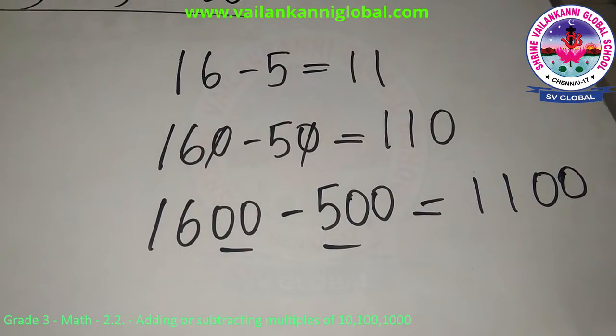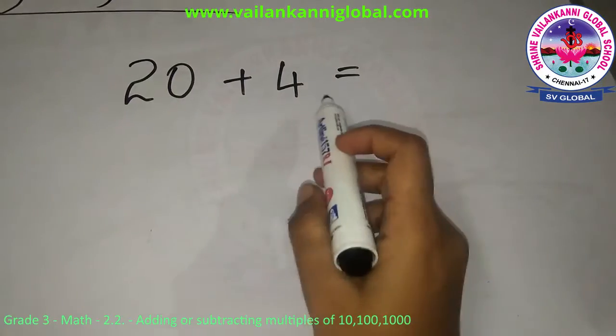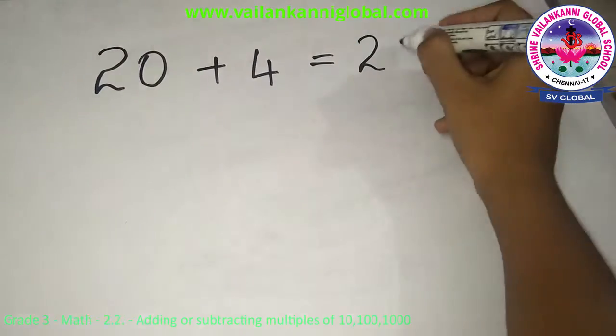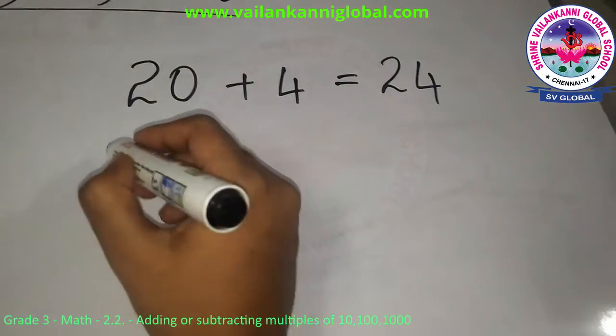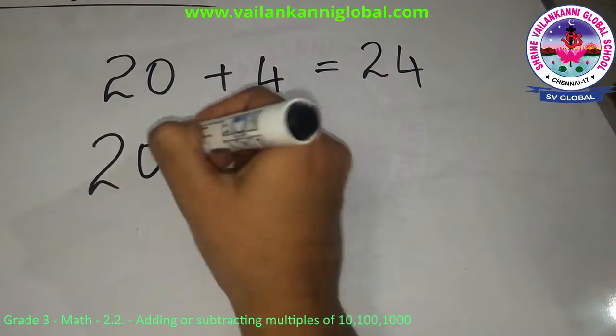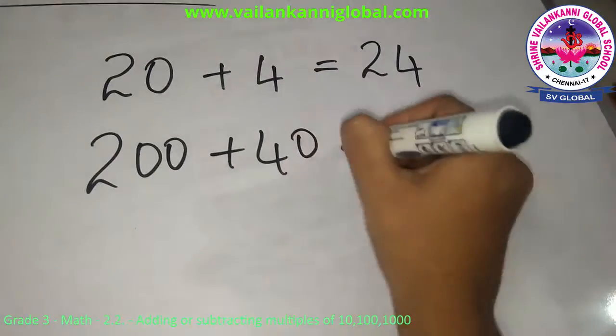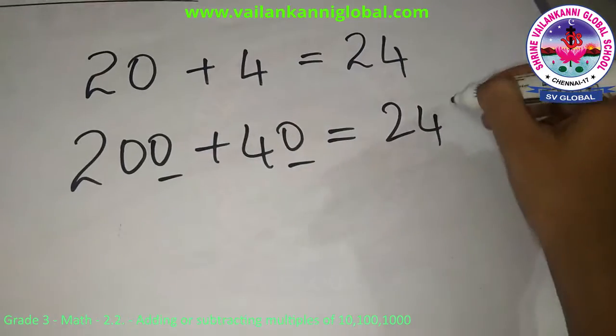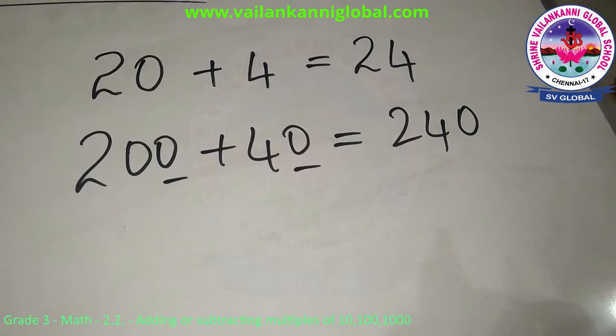Let's see another example. So we know that 20 plus 4 is 24. So I am going to add zeros. So 200 plus 40 which is 24 and 10 extra which is 240.